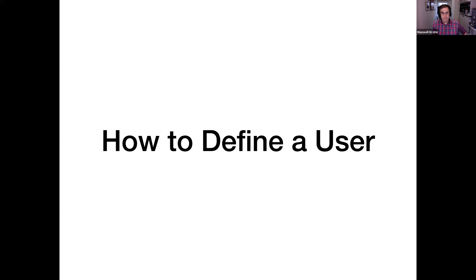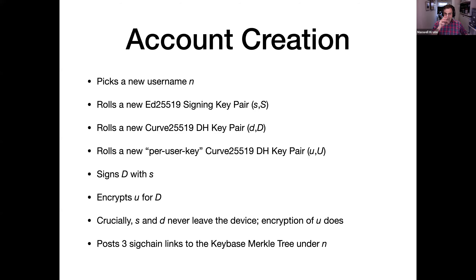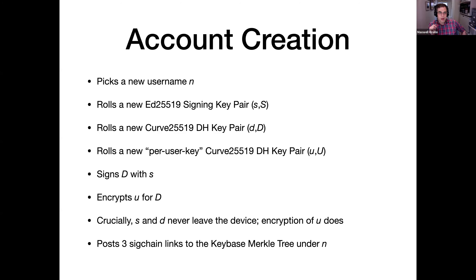How do you create an account? The first thing you do in Keybase is pick a username — let's call it N — and you're creating an account on a new device. It's basically simultaneous signup and device provisioning. This will be your first device. Each device gets a signing key pair, which we call lowercase s for the secret key and uppercase S for the public key — that's ed25519, a pretty popular elliptic curve for signing right now with great implementations, no crypto pitfalls, and it's very fast. Each device also gets a Diffie-Hellman key pair — curve25519 — with private key lowercase d and public key uppercase D.